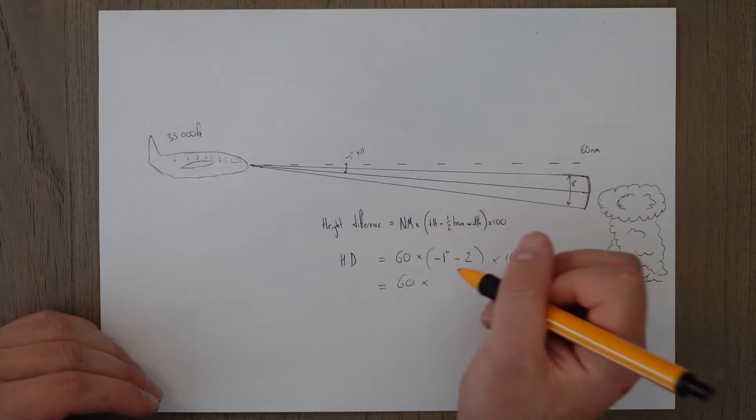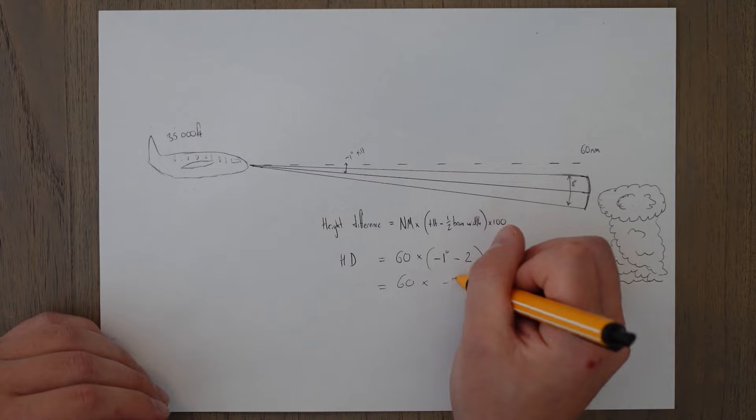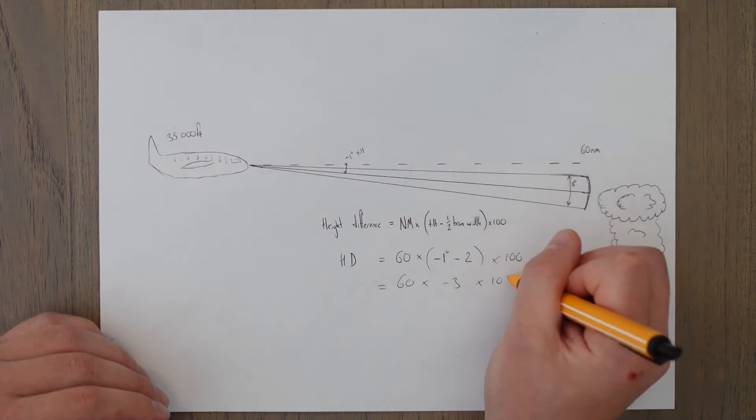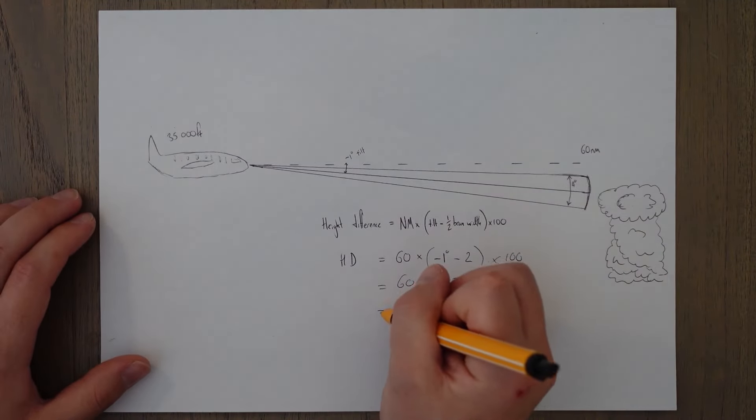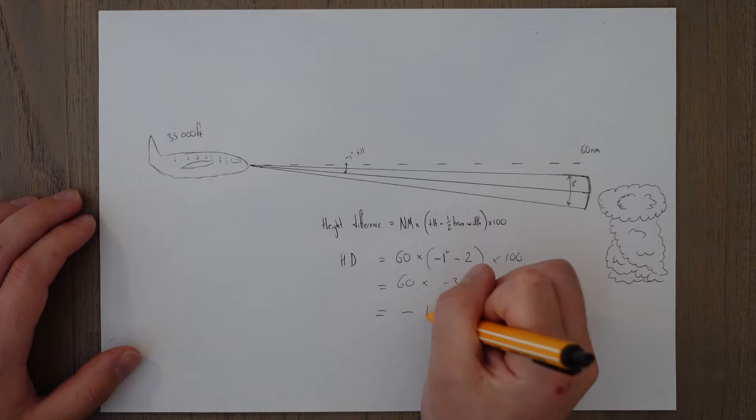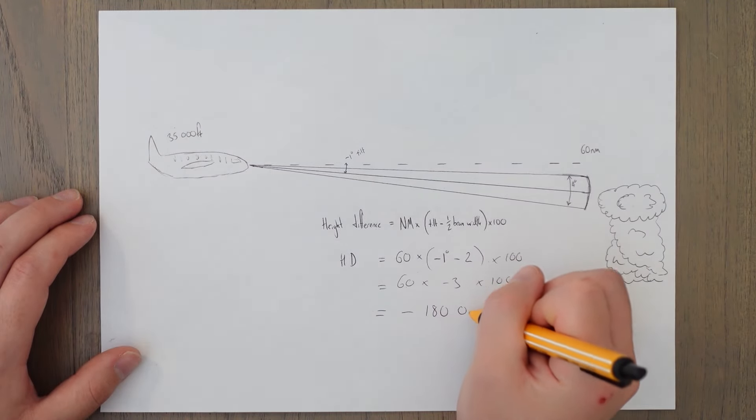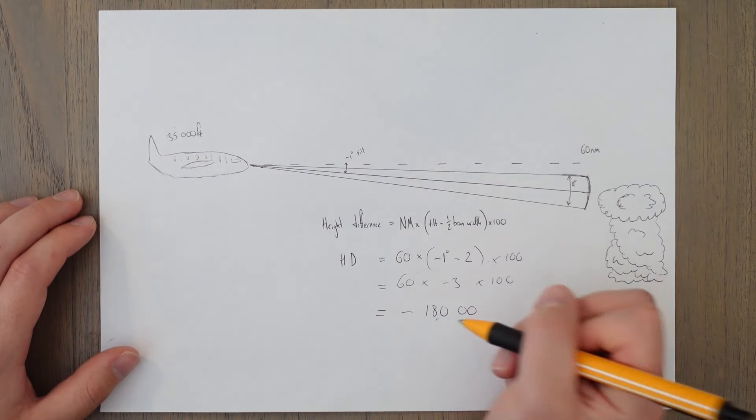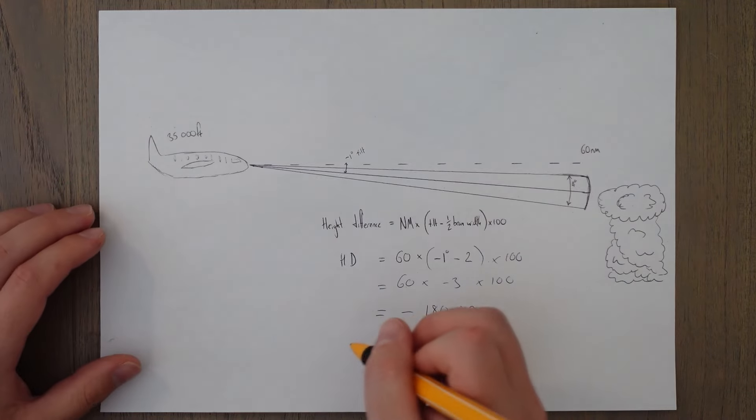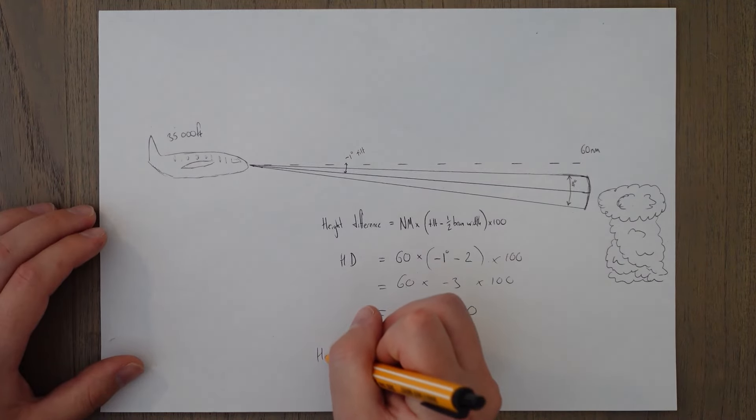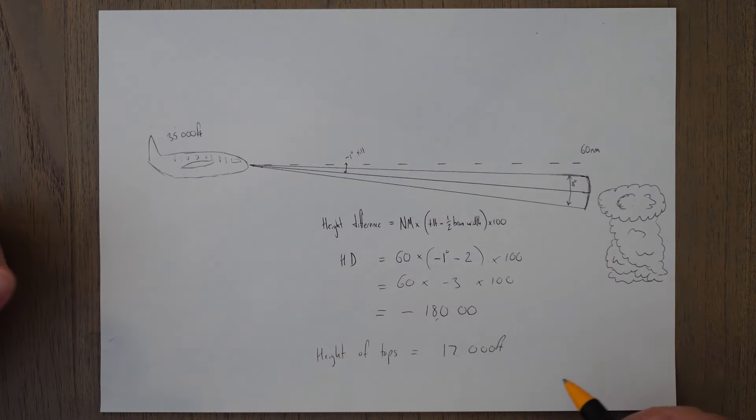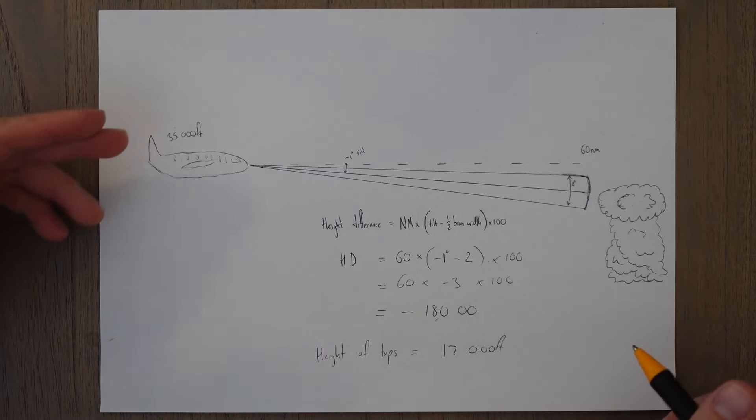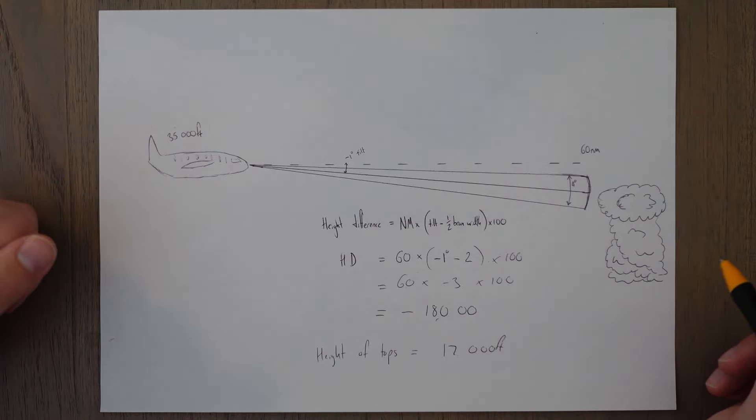So we've got 60 times minus one minus two minus three times 100 and then if we calculate that all out that's going to be minus 18,000 feet below us so at 35,000 feet the actual height of the tops is at 17,000 feet so at 35,000 feet we are well above these clouds and we can safely fly over it.